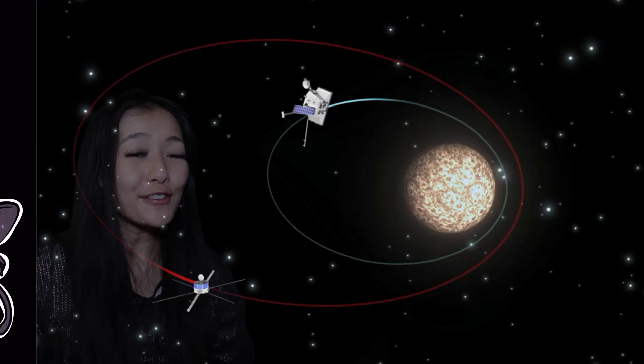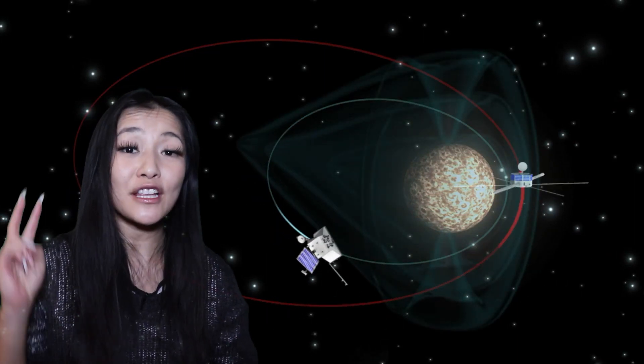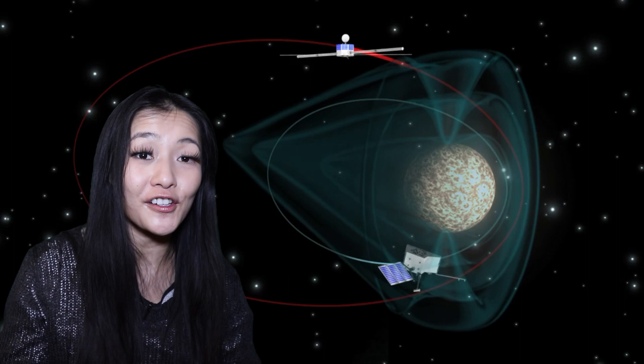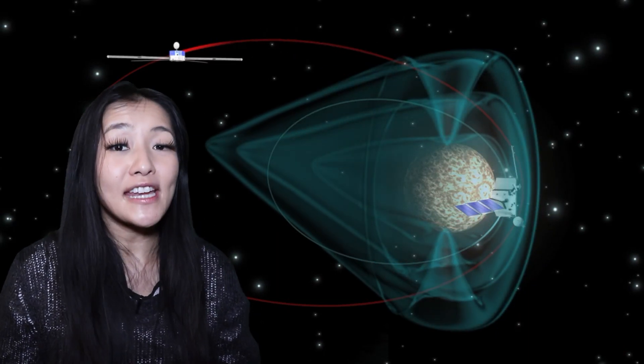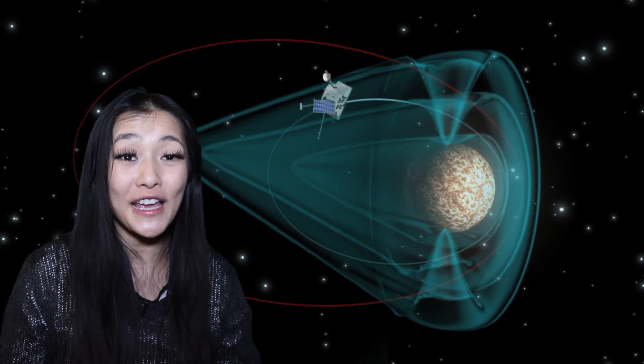So Mercury is definitely a very special planet. And in fact, in 2018, ESA sent two spacecraft to study Mercury. But even though it's our nearest neighbor planet, it's still going to take us seven years to get there.